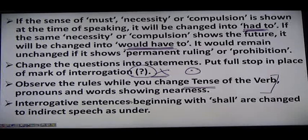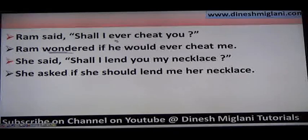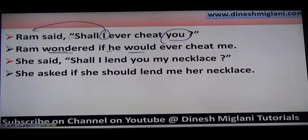Interrogative sentences beginning with 'shall' are changed in indirect speech. Example: Ram said, 'Shall I ever cheat you?' Ram wondered if he would ever cheat me — because Ram is talking to me, so 'you' becomes 'me'. Another example: She said, 'Shall I lend you my necklace?' She asked if she should lend me her necklace, because she is talking to me.